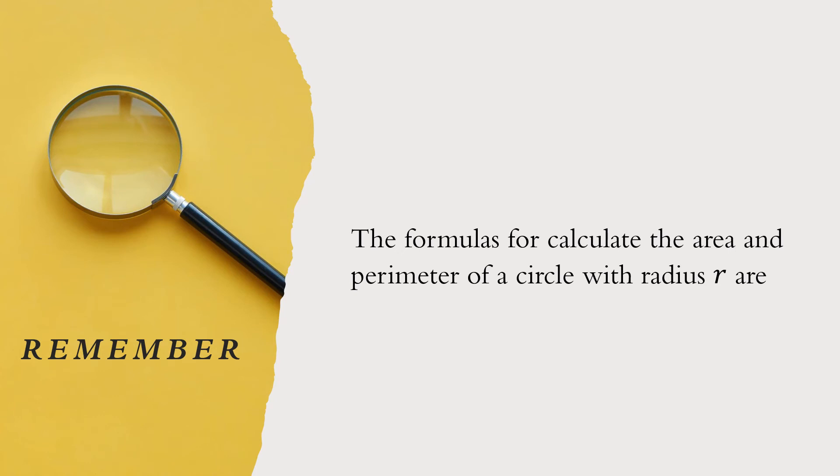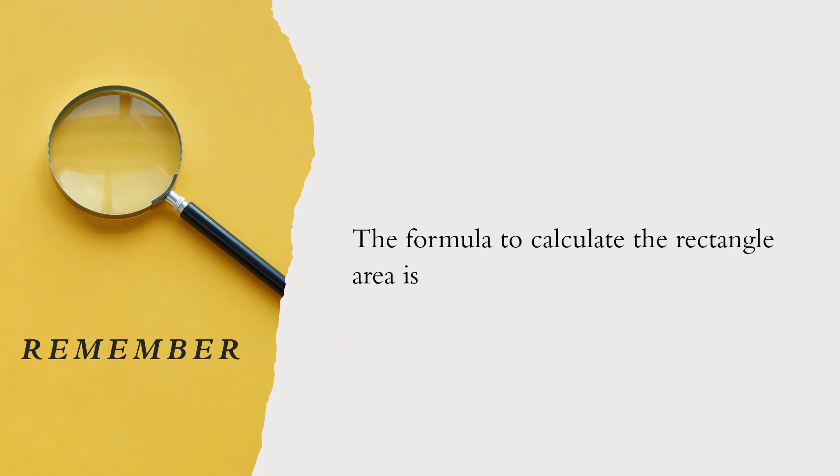Remember, the formulas to calculate the area and the perimeter of a circle with radius R and the formula to calculate the rectangle area is where C and L are the length measure of the rectangle sides.